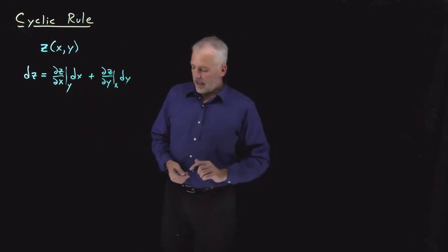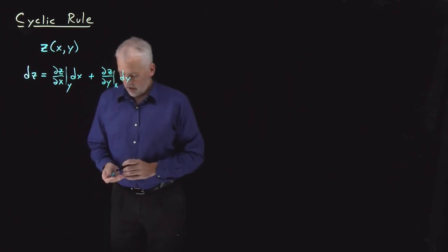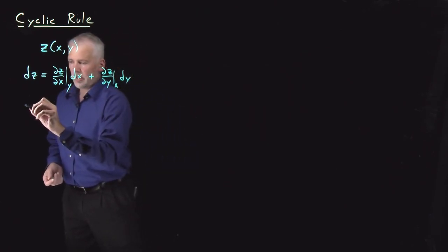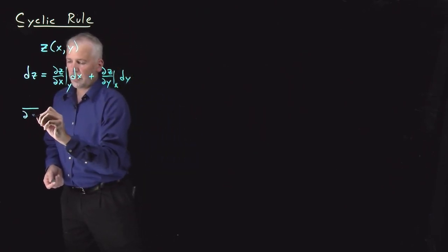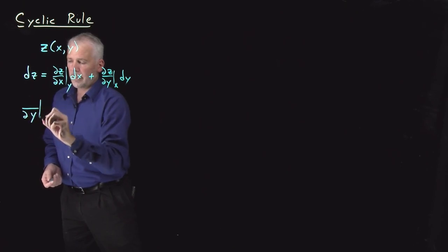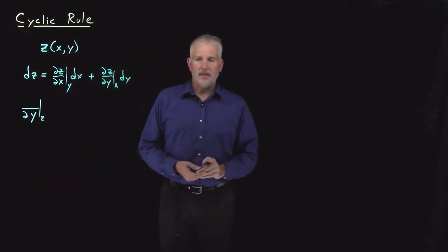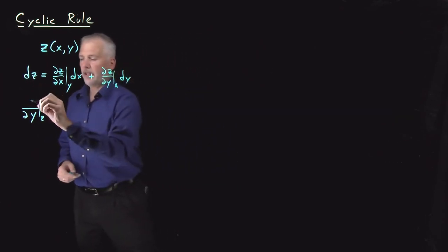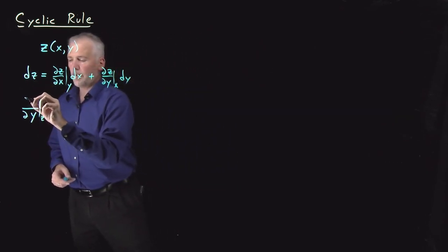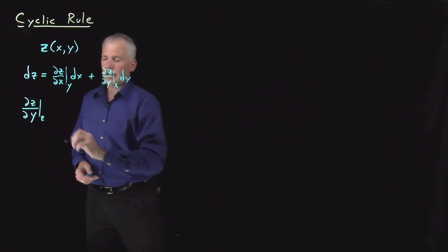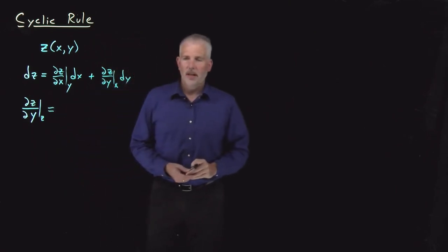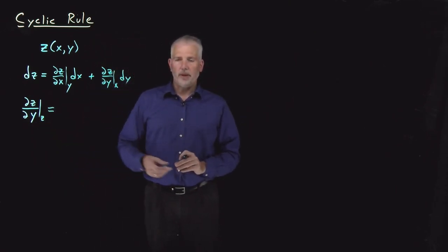So what I'm going to do next now is I'm going to take both sides of this equation and take the derivative with respect to y at constant z. So on the left side, that dz, I'll just put it over a dy and it becomes ∂z/∂y at constant z. I need to do the same thing on the left and the right sides of the equation.